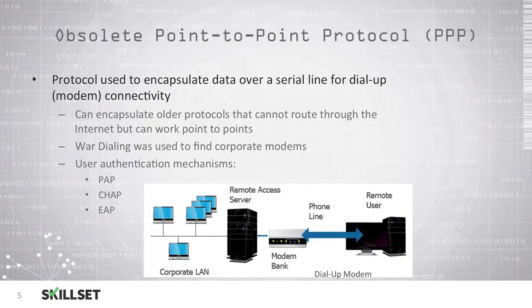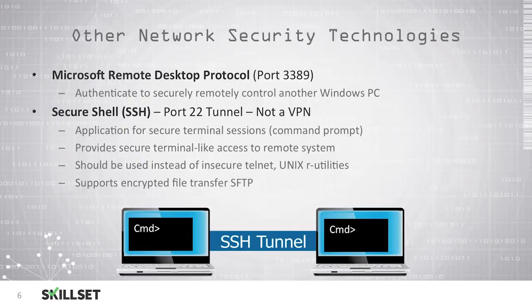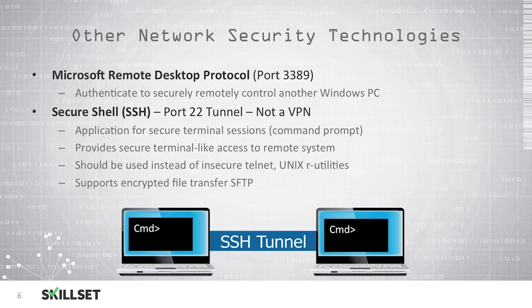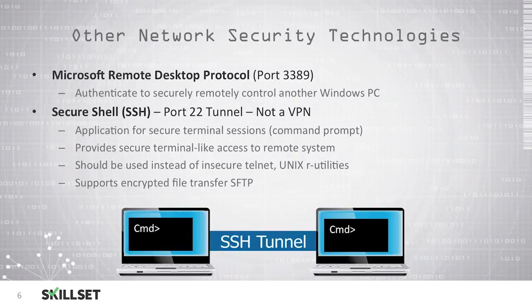There are several methods used to authenticate a user, including PAP, CHAP, and EAP. Microsoft Remote Desktop Protocol (RDP) is another way to remotely connect to and control a Windows PC. RDP commonly uses port 3389 by default, though it is possible to change this port. Secure Shell (SSH) uses port 22 to create a tunnel to remotely control a system, but this is not a VPN connection.